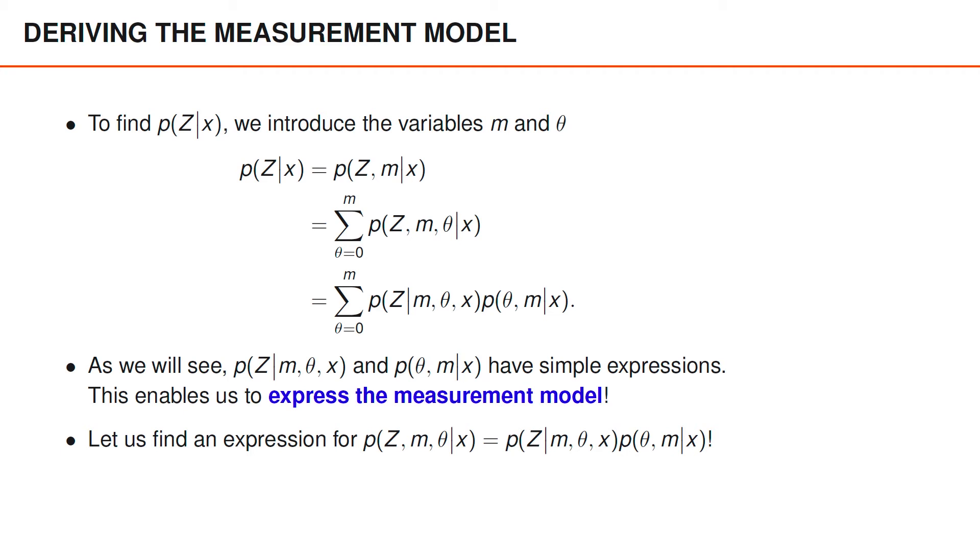The basic idea is very widely used and therefore important to know about. A general description is that we have a distribution which is complicated to express, but managed to identify some variables that would simplify things for us if they were known. In this case, it was the number of measurements m and the data association variable theta. In other situations, these variables could represent how many objects are present in the scene or the intention of a driver when a vehicle enters an intersection.